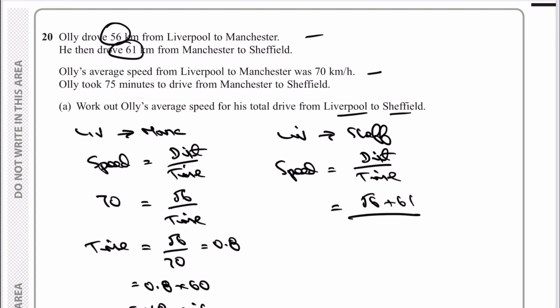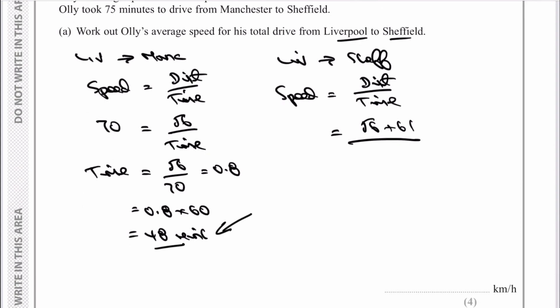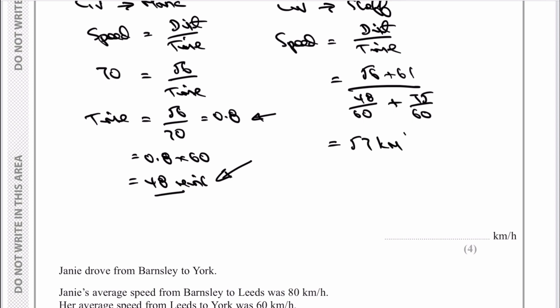The issue is probably the time. Liverpool to Manchester was 48 minutes. To make this work, I use 48 out of 60. I tend to use this method because they'll give us minutes or hours and minutes, and it works every time if you make it out of 60. So I've got 48/60 + 75/60. It looks complicated but a calculator can cope with it. When we feed that into the calculator, we get 57 kilometers per hour. This method will always work to get the hourly rate.